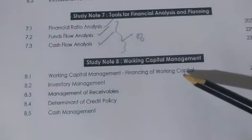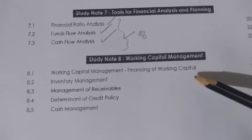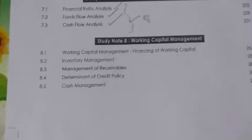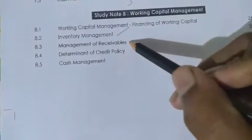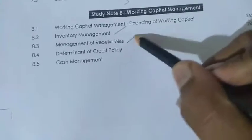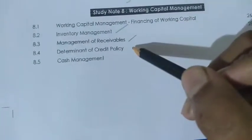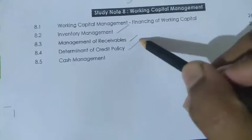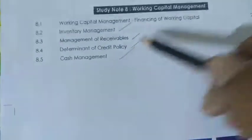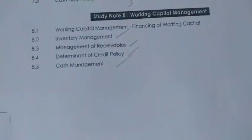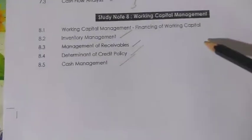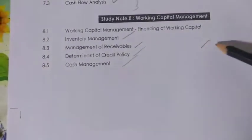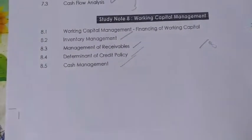The eighth chapter is Working Capital Management. The main areas here are Inventory Management, Management of Receivables, Determinants of Credit Policy, and Cash Management. This is a numerical chapter and is a key question area for the second section.